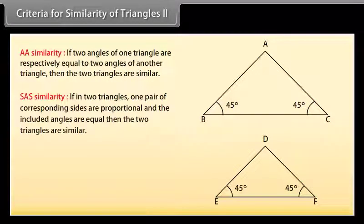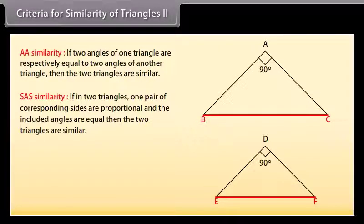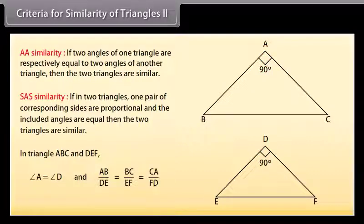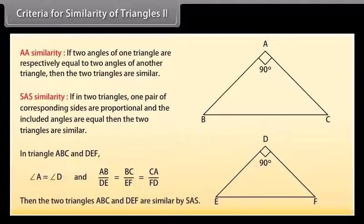SAS similarity: if in two triangles one pair of corresponding sides are proportional and the included angles are equal, then the two triangles are similar. In triangles ABC and DEF, if angle A equals angle D and AB upon DE equals BC upon EF equals CA upon FD, then triangles ABC and DEF are similar by SAS similarity.